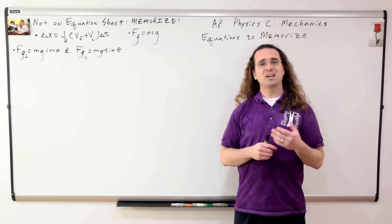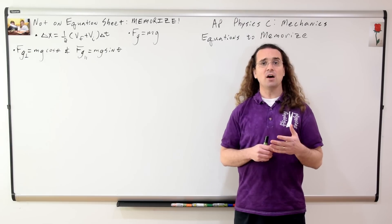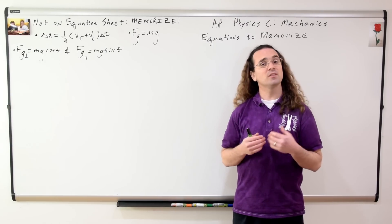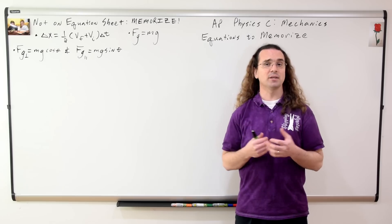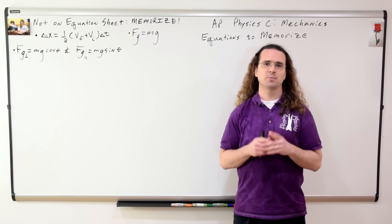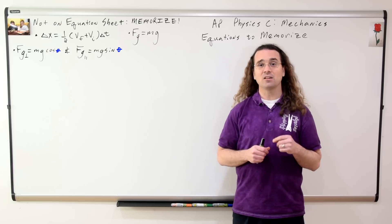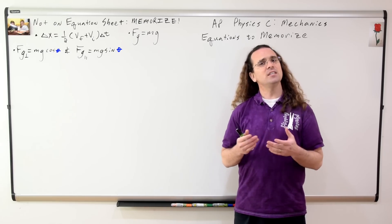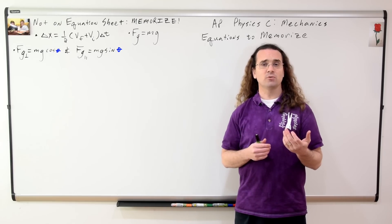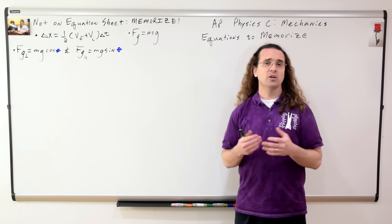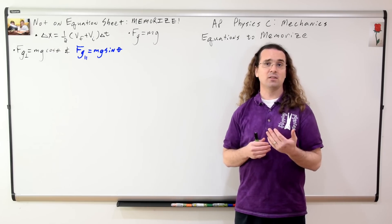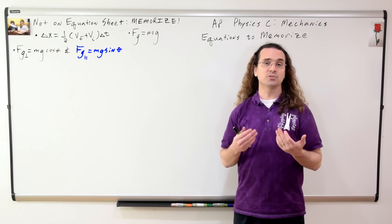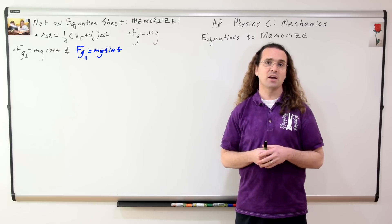When an object is on an incline, we will often, though not always, break the force of gravity into its components in the parallel and perpendicular directions. The theta here is the angle of the incline, and it's easy to remember which of these two equations is which because the force of gravity parallel on a flat surface is equal to zero and the sine of zero degrees is zero.